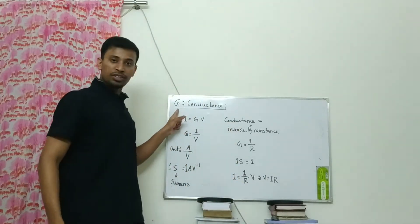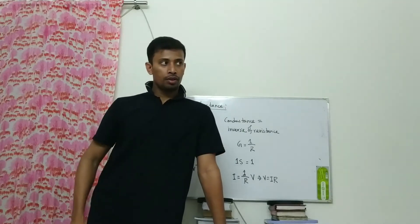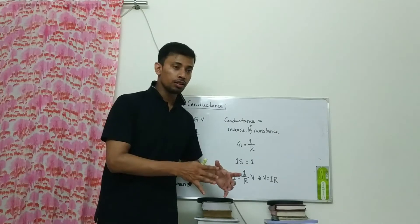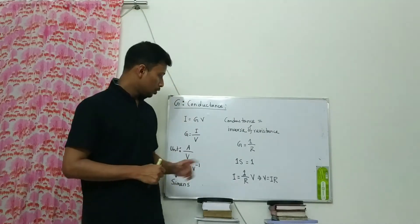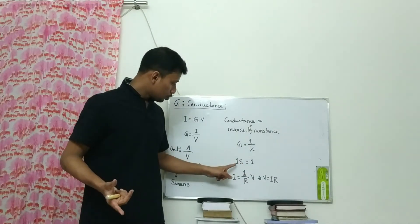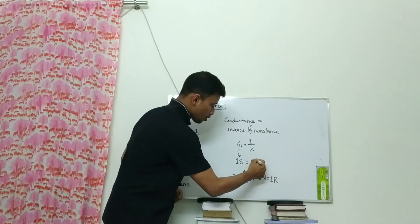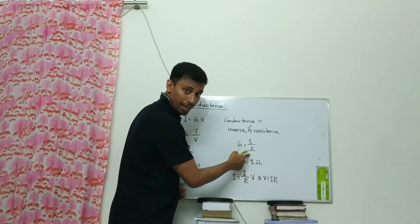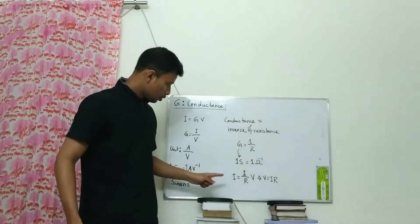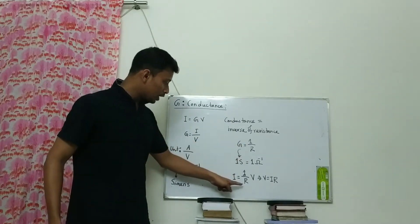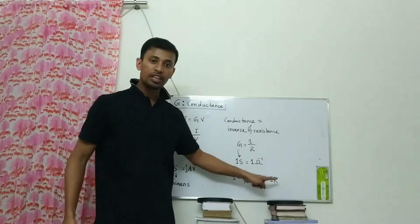More resistance means more obstacle, so more resistance means less conductance. Therefore we can write G equals 1/R, as it is the inverse of resistance. The unit of G in terms of resistance: 1 Siemens equals 1 ohm inverse. This is very important and can appear in MCQs. Substituting 1/R in place of G in I = G·V gives I = (1/R)·V, or V = IR — that is the actual equation for Ohm's Law.